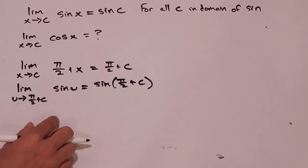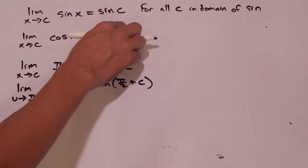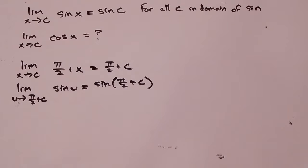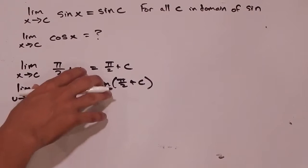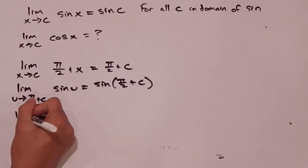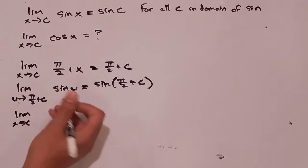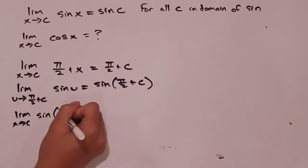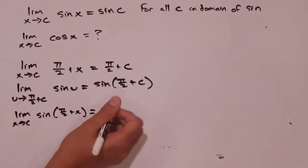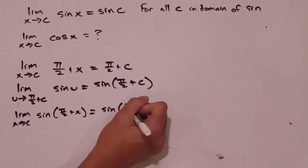We said that the limit as x goes to c of sine of x is just equal to sine of c for all c values in the domain of sine, so that also makes sense. Based on our rule for limits of composite functions, the limit as x goes to c of sine of π/2 plus x is equal to sine of π/2 plus c.